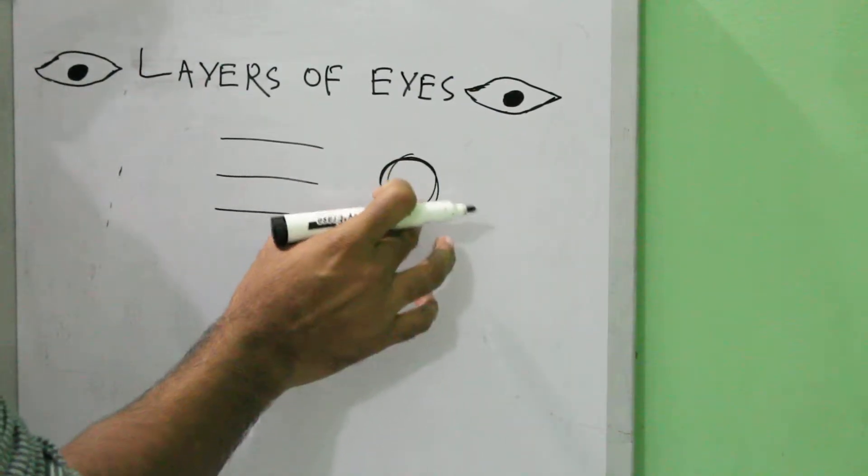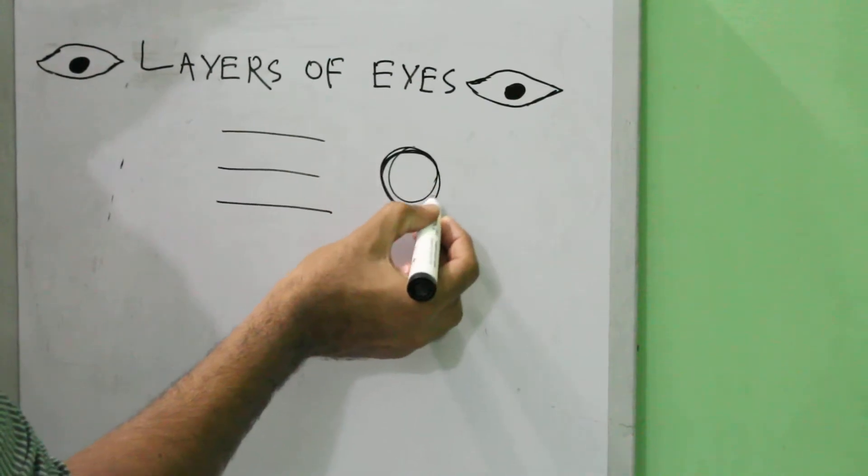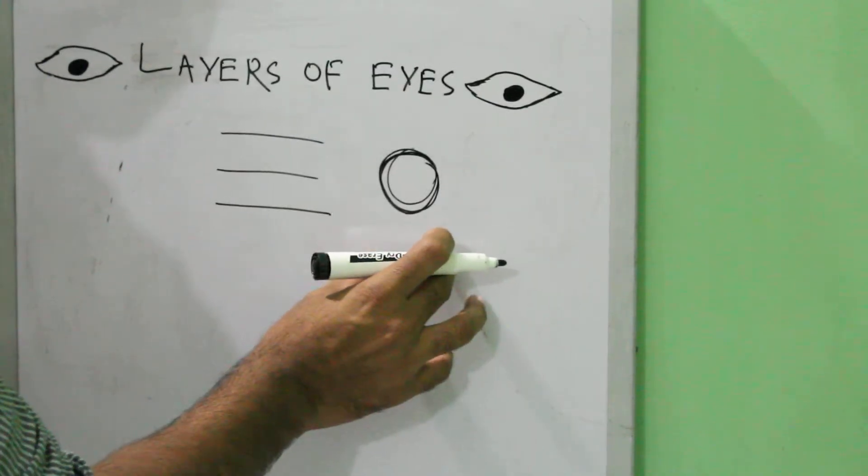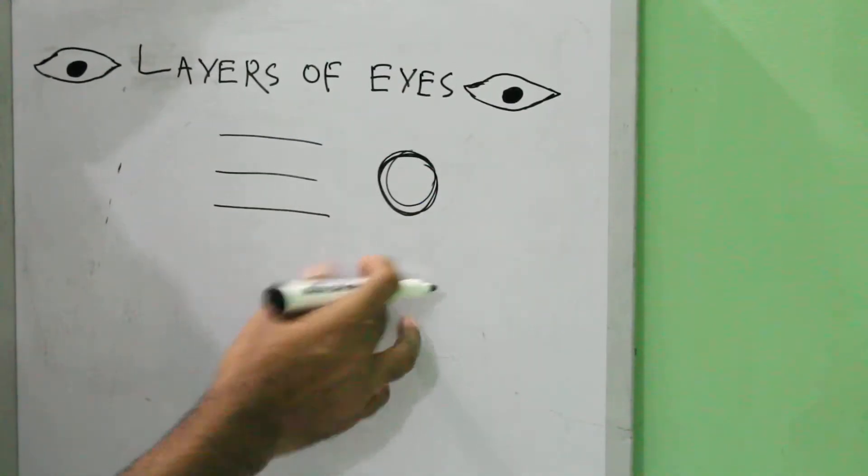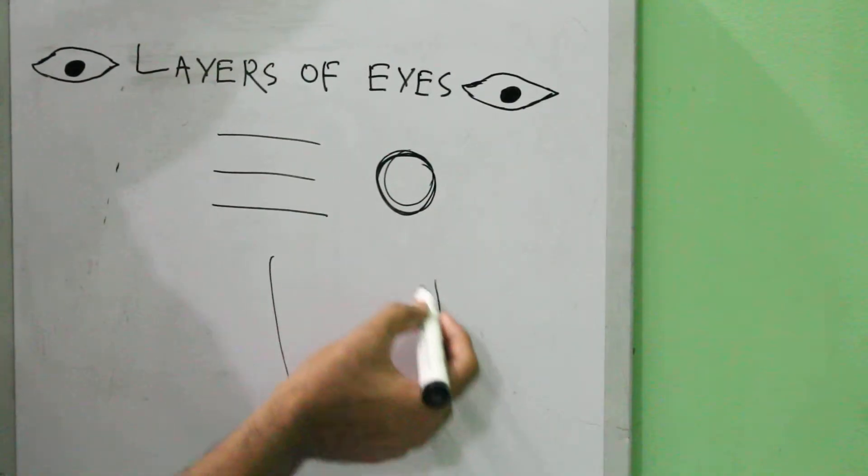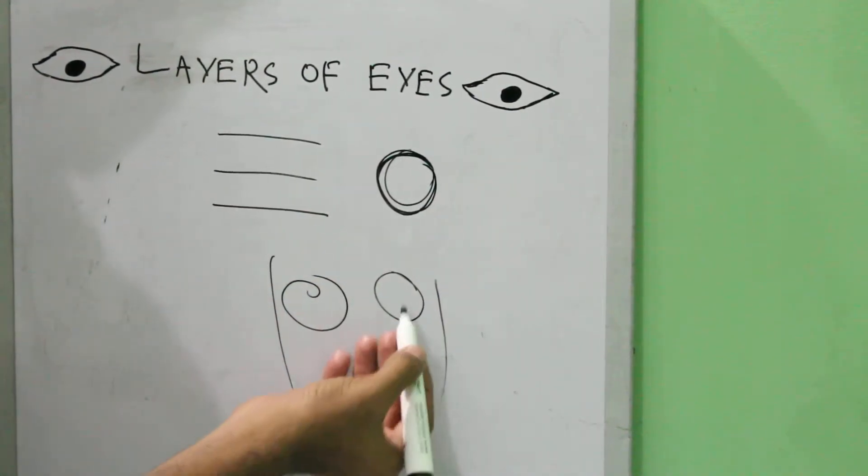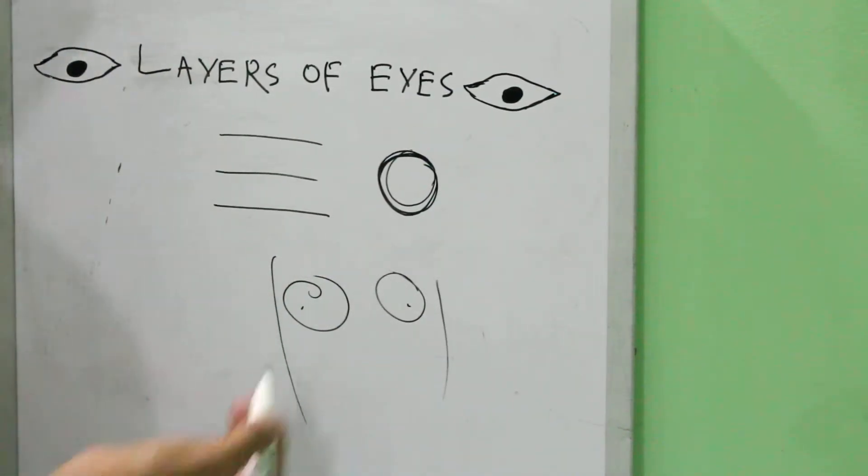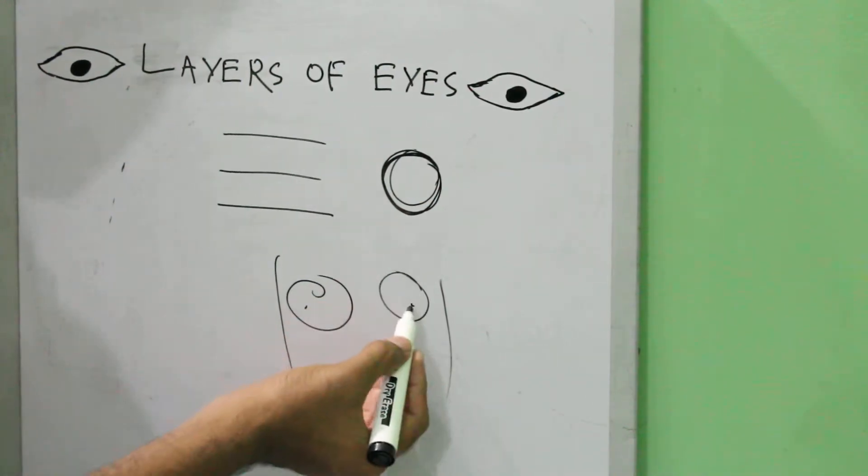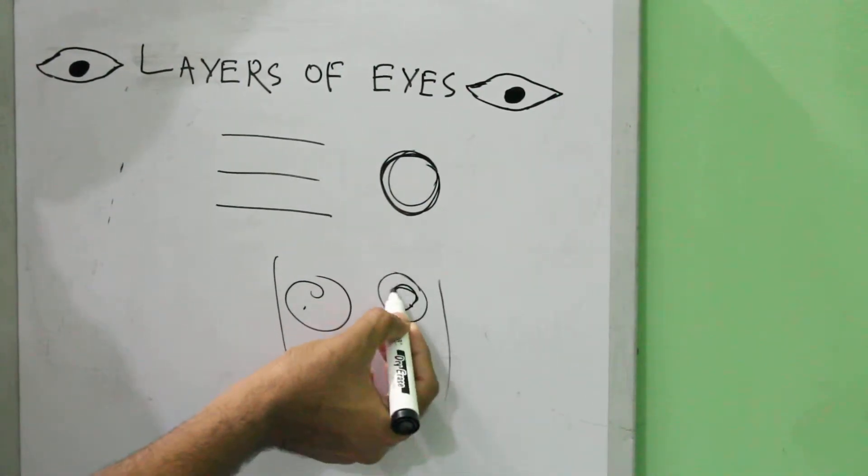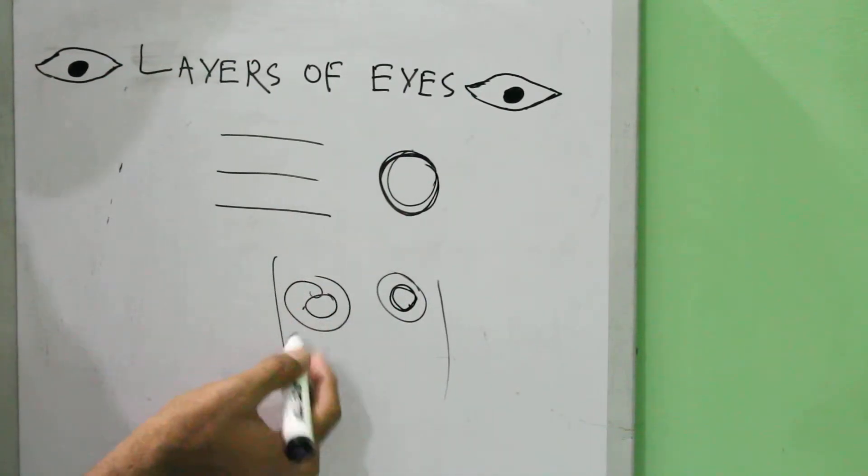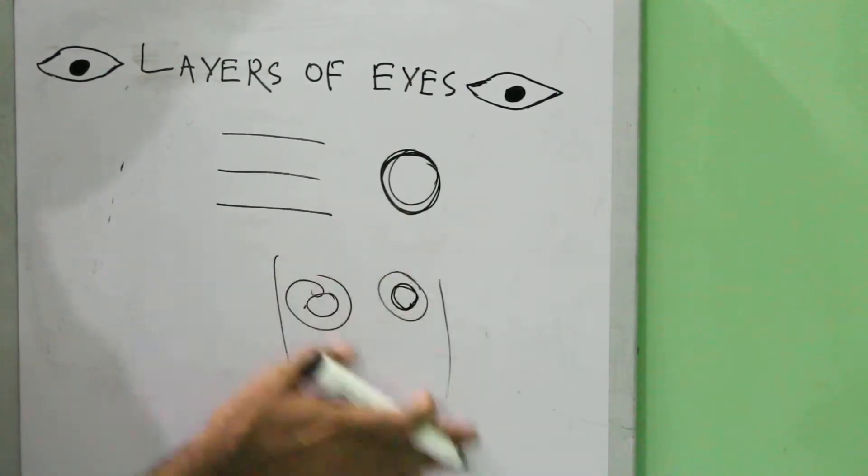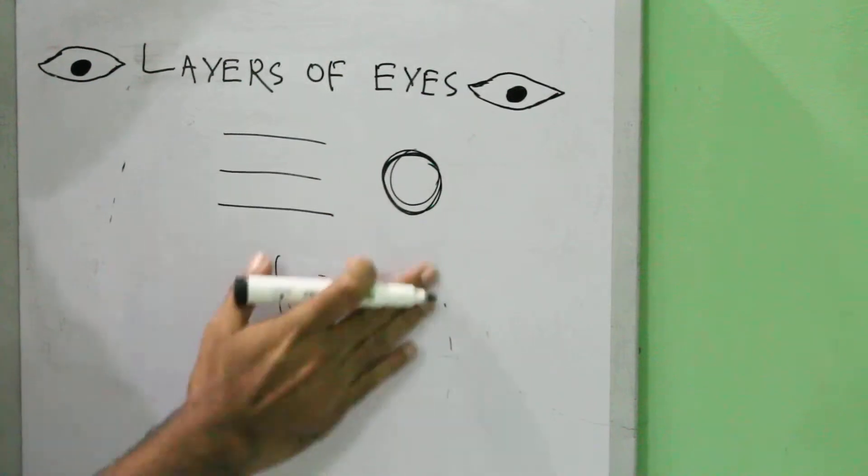The eyeball is a rounded structure which is present in a bony cavity in the skull known as the orbit. For example, this is a face with two orbits - this is one orbit, and this is the right orbit, this is the left orbit. In these left and right orbits, there are two eyeballs. They are like cricket or football balls, which is why scientists gave them the name eyeball.